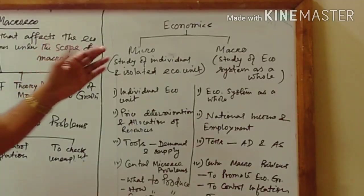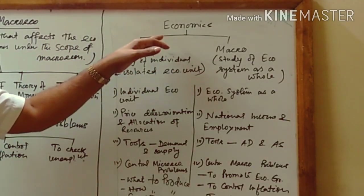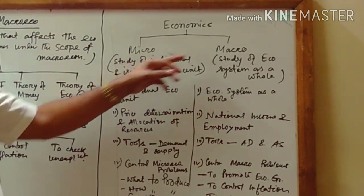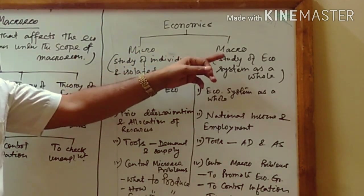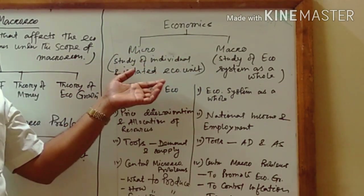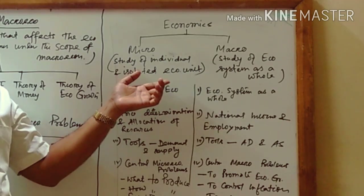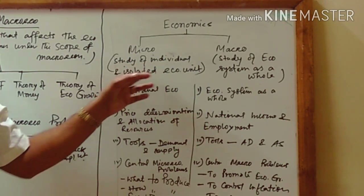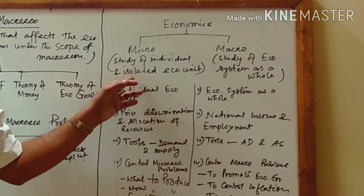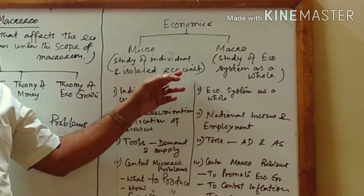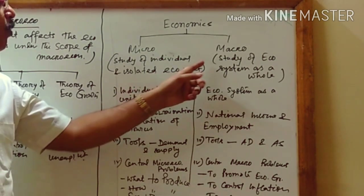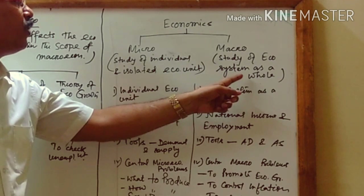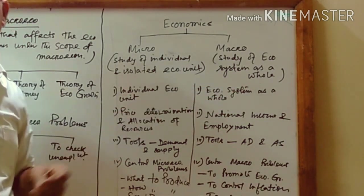As we know, economics broadly has two branches: microeconomics and macroeconomics. Microeconomics, which you have studied in class 11, is the study of individual and isolated economic units. On the other hand, macroeconomics is the study of the economic system as a whole.